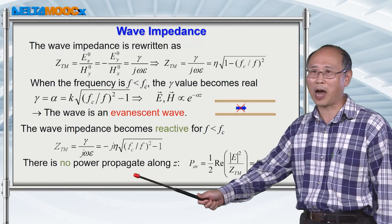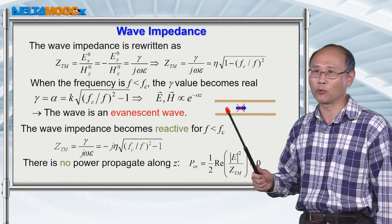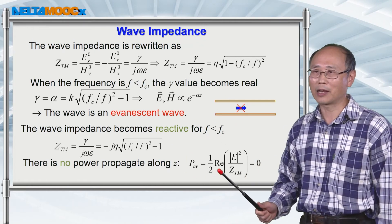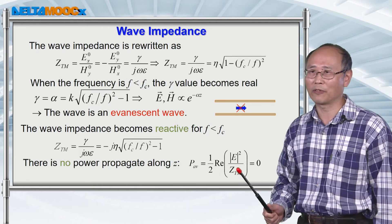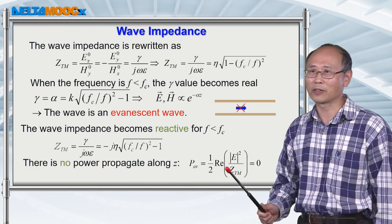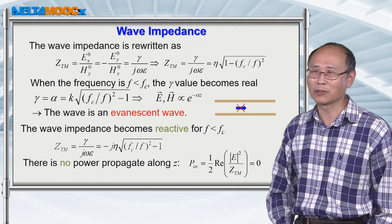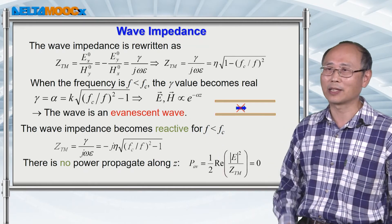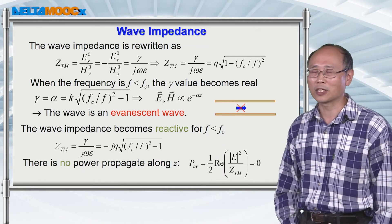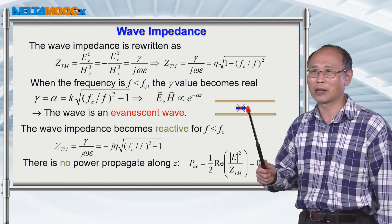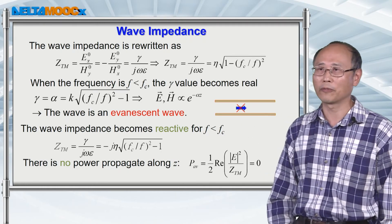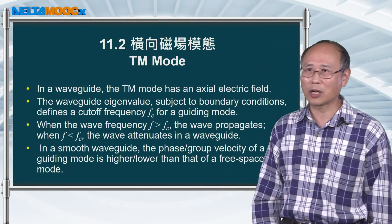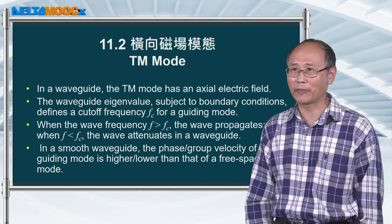When you calculate the power propagating inside this waveguide using the Poynting vector, you get a complex Poynting vector. When you take the real part of it for the case where frequency is less than the cutoff frequency, you end up with no real value. This means that no power can propagate inside such a waveguide. So in this session we talk about the TM mode inside a waveguide.